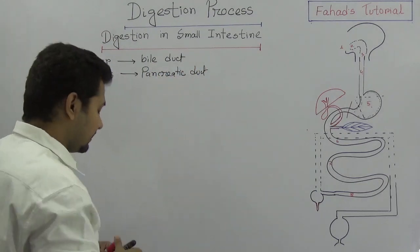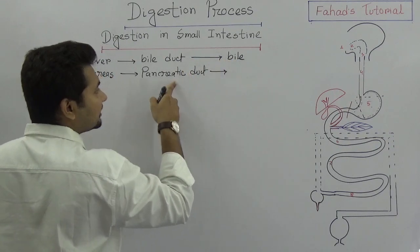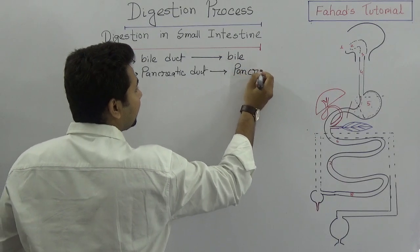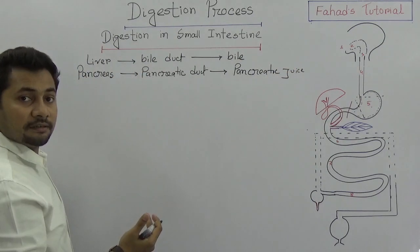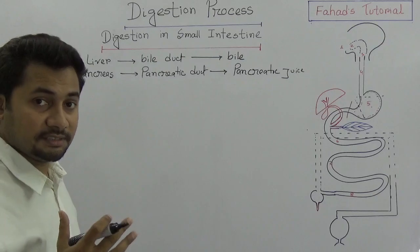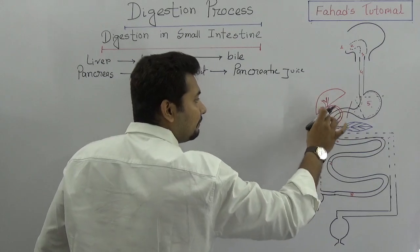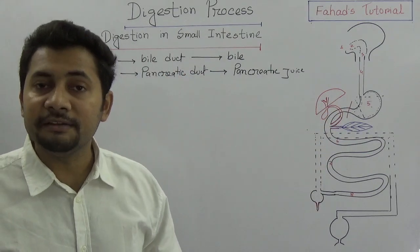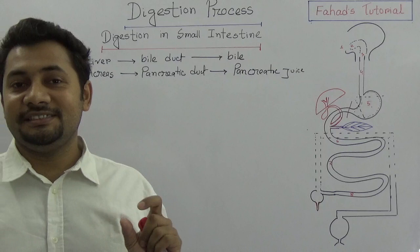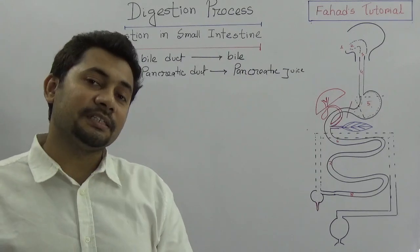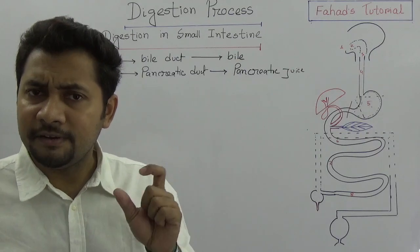The bile and pancreatic juice mix with the chyme in the duodenum. Bile has no enzymes, but the bile salts — known as sodium taurocholate and sodium glycocholate — have specific functions in the digestion process.